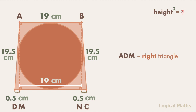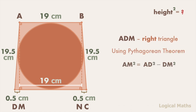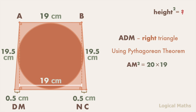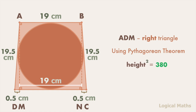Triangle ADM is a right triangle. Since we know two sides of the triangle, we can find the third side using the Pythagorean theorem: AM squared equals AD squared minus DM squared. After substituting, we get 19.5 squared minus 0.5 squared. Using the difference of squares formula, this becomes 19.5 plus 0.5, multiplied by 19.5 minus 0.5, which equals 20 multiplied by 19. Since AM is the height of the trapezoid, height squared equals 380.